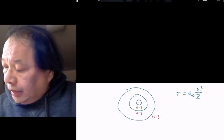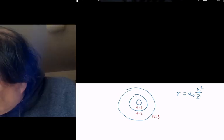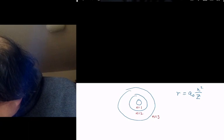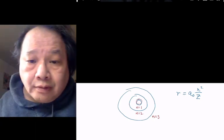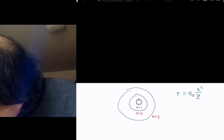And remember n is the number of full waves. So the n equals 1 state is this one full wave. It goes positive, negative and positive. n equals 2 is 2 full waves.